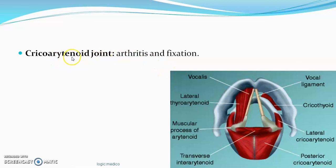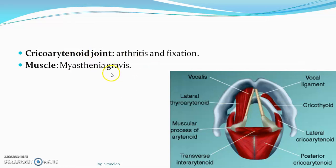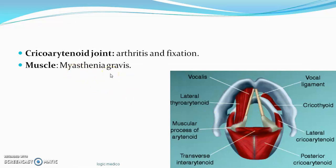Cricoarytenoid joint arthritis — though rare — can also cause hoarseness, as this joint allows the arytenoid to move for abduction and adduction of the vocal cords. Additionally, at the neuromuscular junction, if autoantibodies are produced against it, acetylcholine cannot act on the muscle, resulting in no muscle contraction and hoarseness. This is what happens in myasthenia gravis, an autoimmune disorder of the neuromuscular junction. Hysterical aphonia is a functional disorder that can be treated.